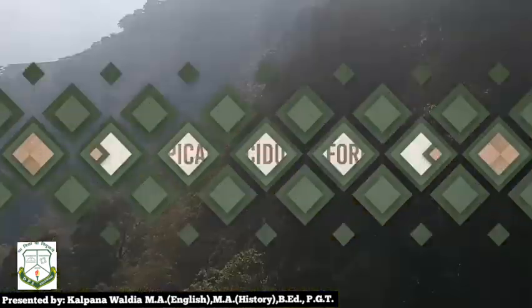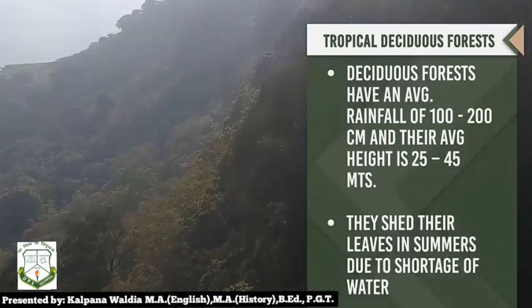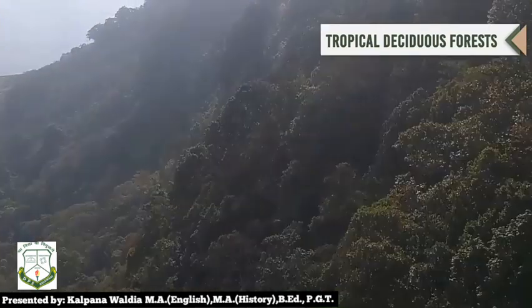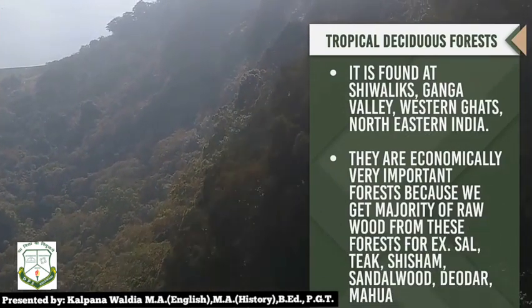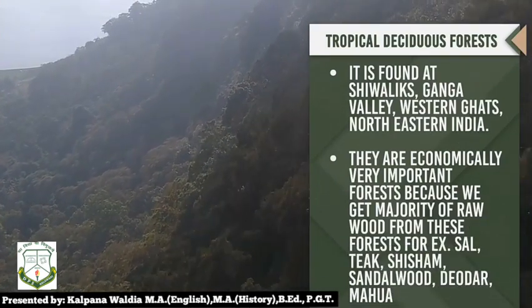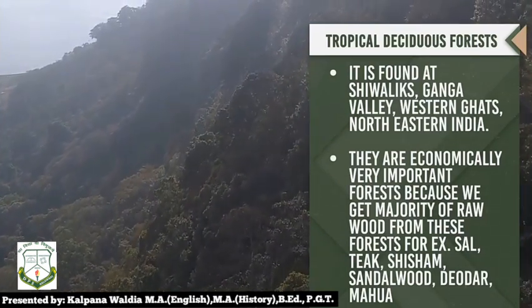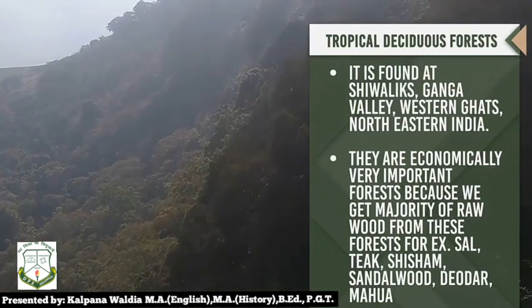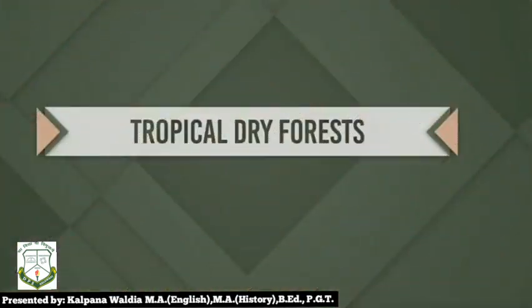Next comes the tropical deciduous forest. These forests have an average rainfall of 100 to 200 centimeters. They shed their leaves in summer due to shortage of water. They are found at the Shivalik ranges, Ganga valleys, Western Ghats, Northern Ghats, and north and east India. They are economically very important forests because we get the majority of raw wood from them — for example, sal, teak, sesham, sandalwood, and mahua.